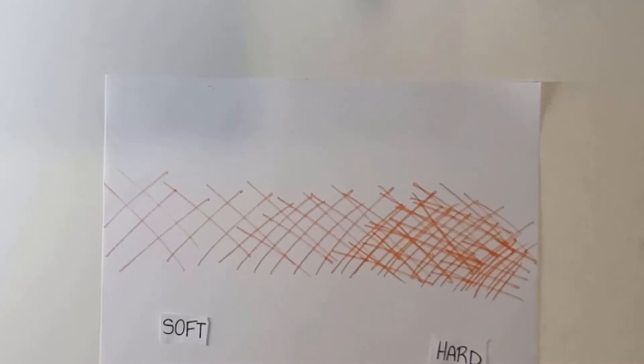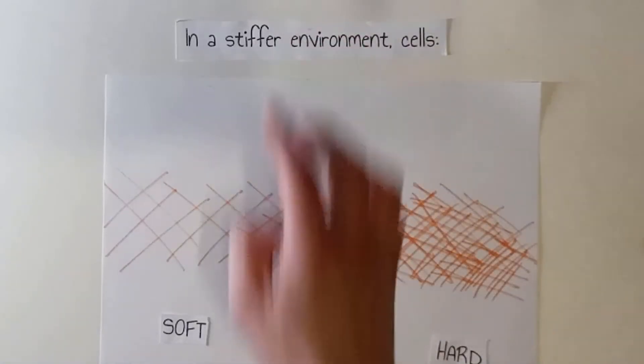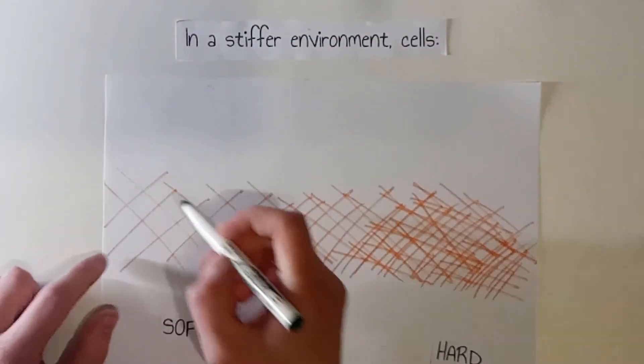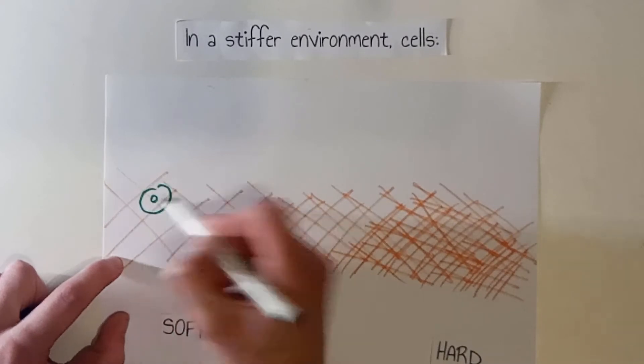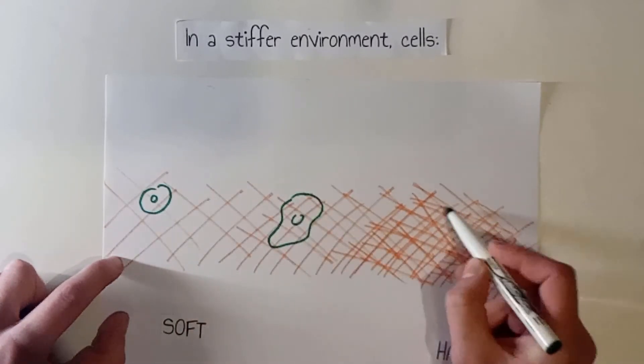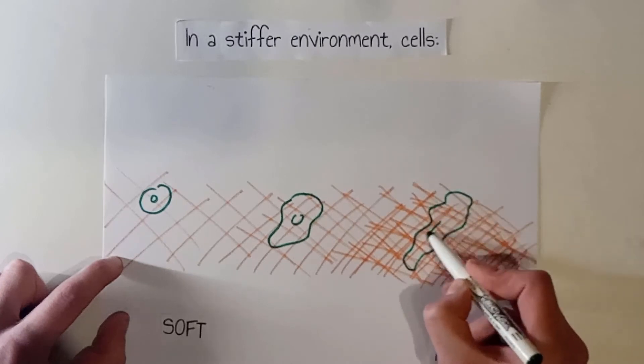But how does a cell behave in a stiffer environment? Let's compare three cells: one in a very soft matrix, one in a mildly soft matrix, and the last one in a hard matrix.